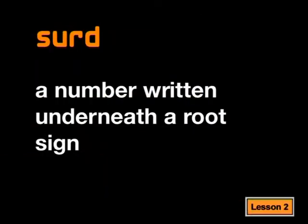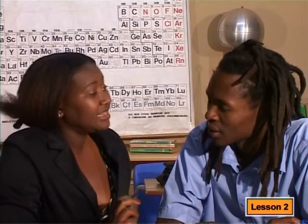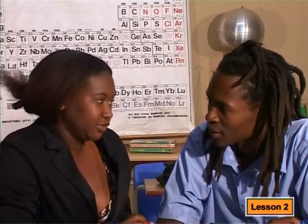A surd is a number written underneath a root sign. We use it in maths to accurately represent an irrational number. And are there rules for surds like there are rules for exponents? Yes, that's right. But in this case, there are only three laws you need to remember.